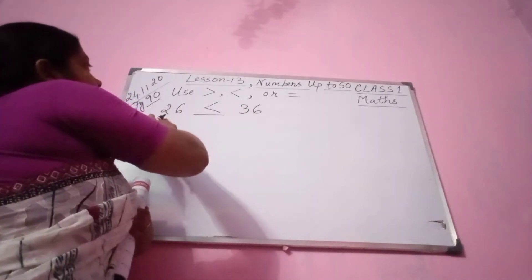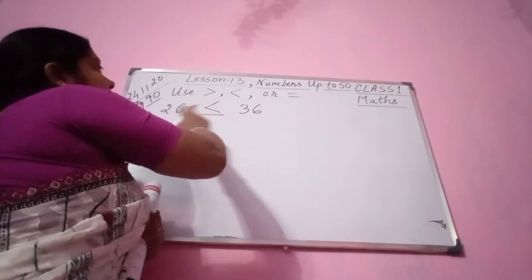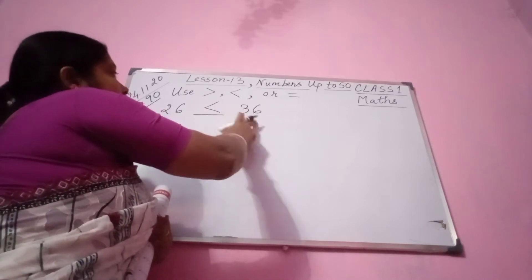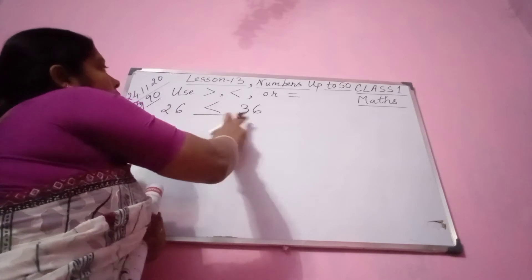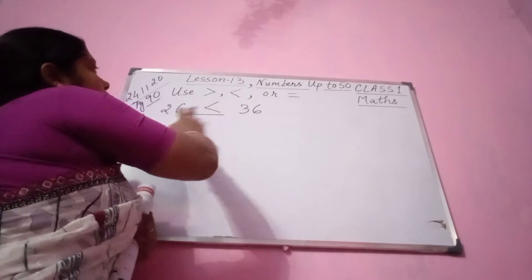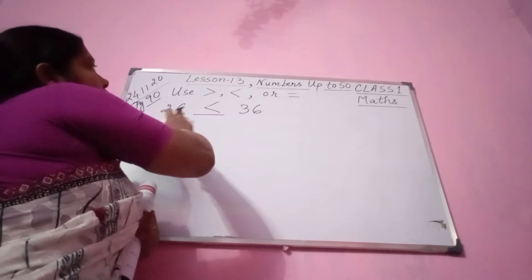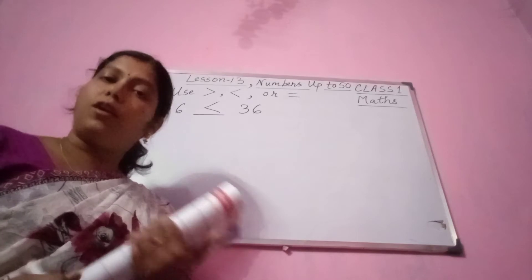26 is 2 tens, 6 ones, and 36 is 3 tens, 6 ones. So you compare both numbers — which one is smaller? 26 is smaller. So we are going to put this sign.